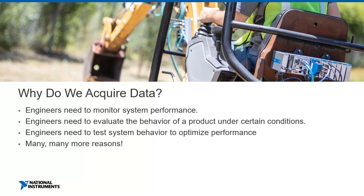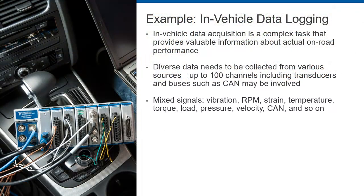A great example of data acquisition is in-vehicle data logging. Measurements for this application are diverse — they include vibration, revolutions per minute on the tires, strain on the chassis, temperature, torque, load, pressure, velocity, and many more. If you were assigned the task of reducing axle load on a car while driving, you would first need to understand the current state of the axle load. You would need at least two load measurements, one on each axle, and you would want to take these simultaneously to see the relationship between load distribution on both axles at any given time.